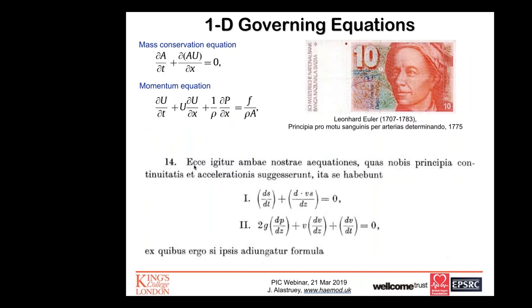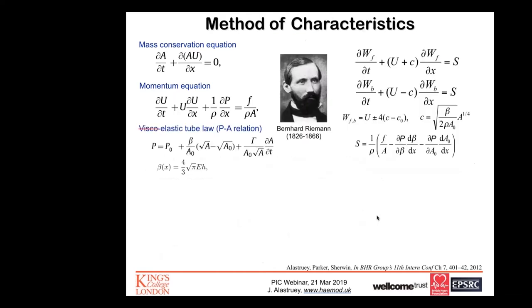The first two governing equations are not new — they were actually proposed by Euler a few centuries ago. It's curious to note that in explaining the motion of blood, he mentioned insuperable difficulties that impede us from accurately representing the work of the creator in all its splendor. It wasn't until Riemann, almost a century later, that we could really highlight the wave nature of the 1D governing equations.